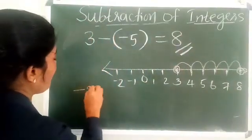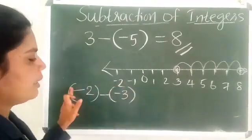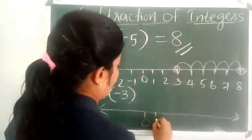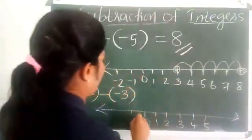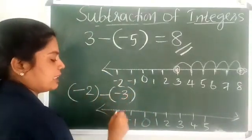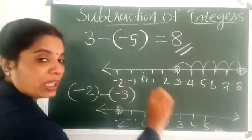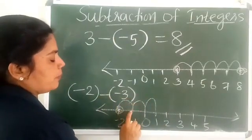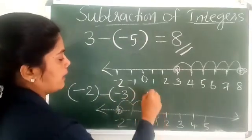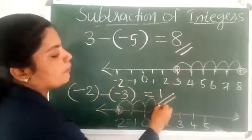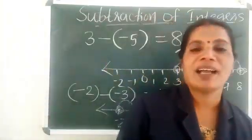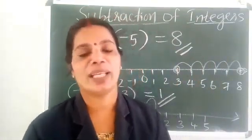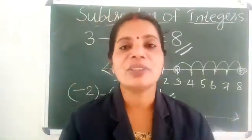Consider another example: minus 2 minus minus 3. Draw a number line marking 0, 1, 2, 3, 4, 5 and minus 1, minus 2. Starting from minus 2, to subtract a negative integer, move to the right — 3 steps to the right. We reach the point 1. So, minus 2 minus minus 3 equals 1. To subtract a positive integer, move left; to subtract a negative integer, move right.